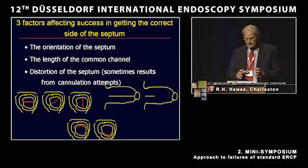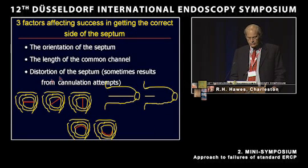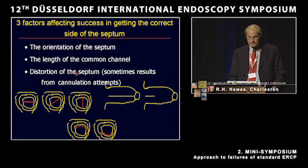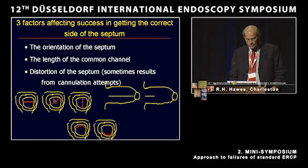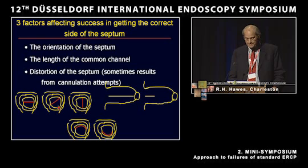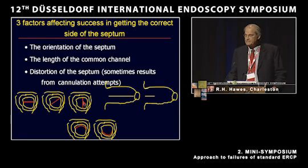In diagrammatic form, the three factors affecting whether you get on the correct side of the septum include the orientation of the septum itself. The septum can be oriented in different ways — it's not always the traditional teaching that you go at 11 o'clock for the bile duct and 5 o'clock for the pancreatic duct. Sometimes the septum is lined up differently, and you have to recognize that or probe in different places to overcome it.